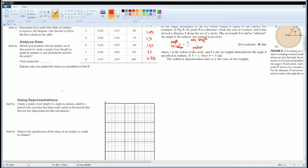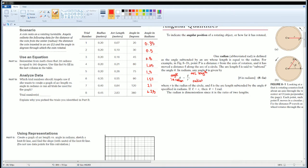Next, we're asked which trial should Angelica use if she wants to create a graph of arc length versus angle in radians. Which trial should she use? I would say that she should use only trials one through five. Now pause this video, take time to explain why you should only use trials one through five.